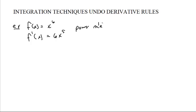And that means, because derivatives undo integrals, that the integral of 6x to the fifth dx is x to the sixth plus c, which we also call the power rule.